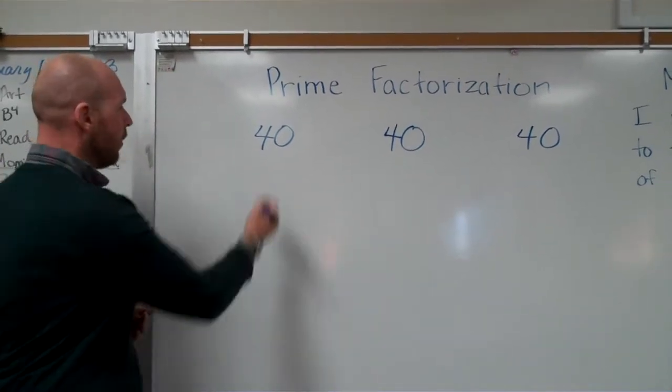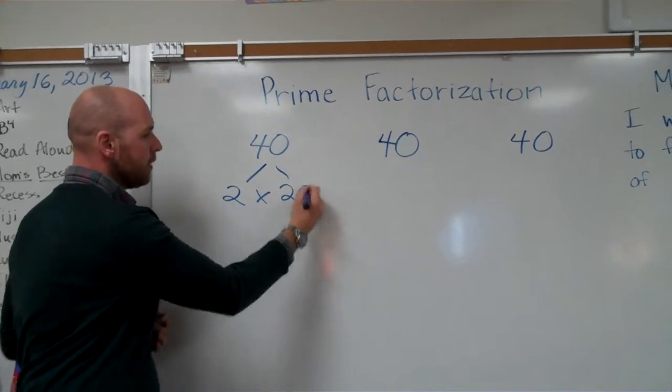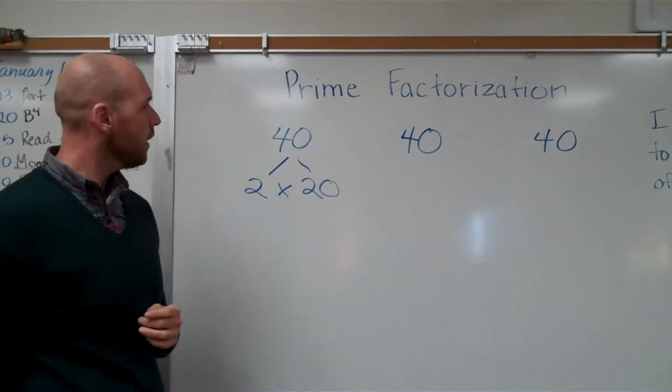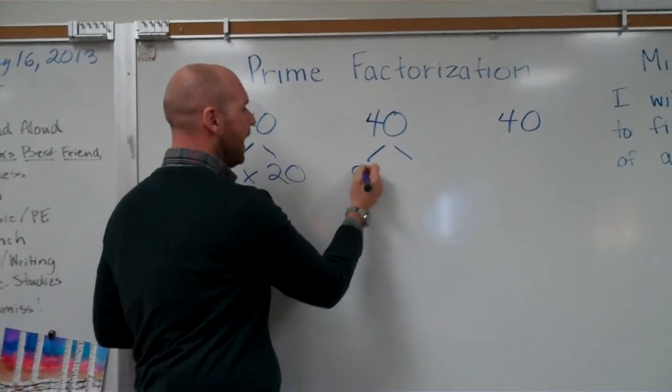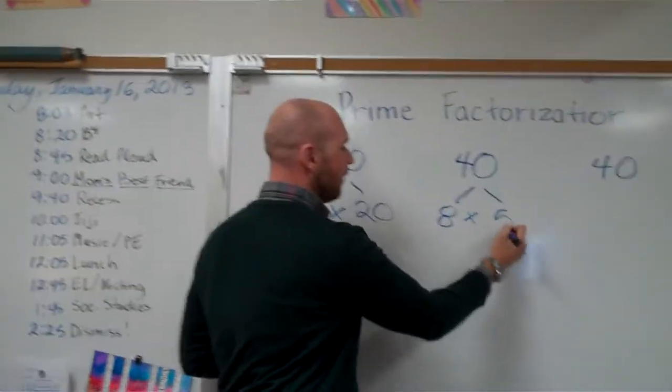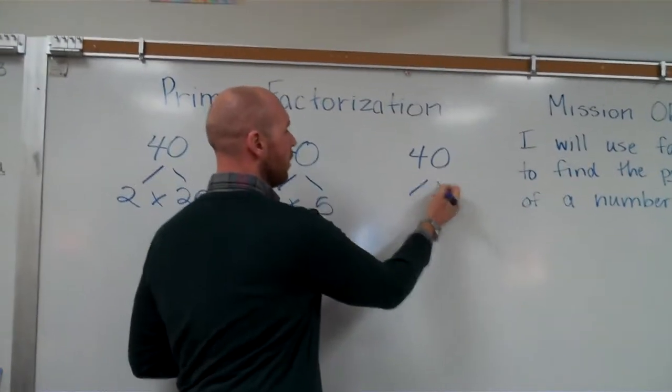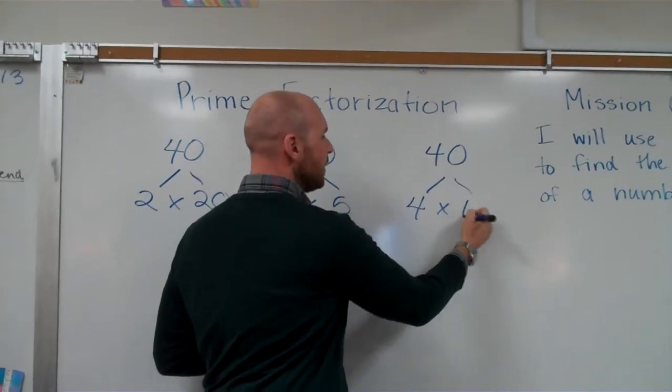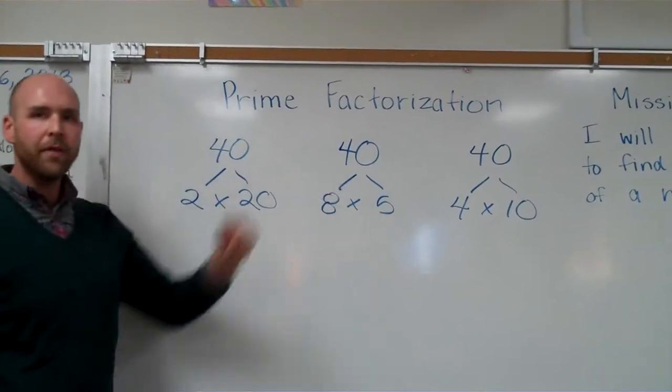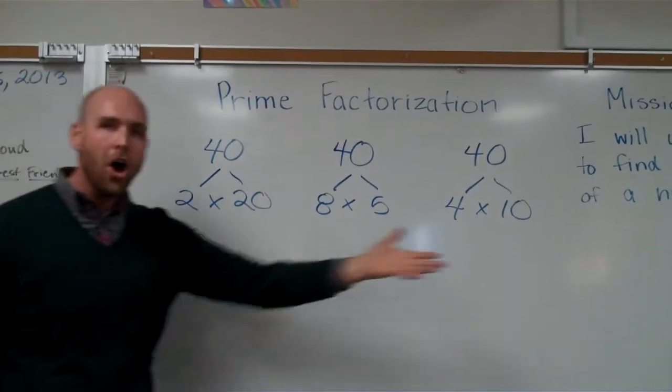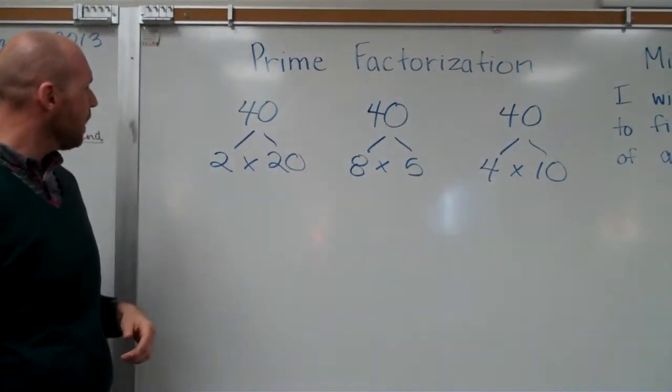So I'm going to show you 3 different ways to get the prime factorization of 40 and that all of them are right. First way to get 40, alright, simple, 2 times 20, there's a start. Another way to get 40, 8 times 5. And another way to get 40, 4 times 10. Three different ways to get to prime factors. And I'm going to show you that they're all correct because we're all going to get the prime factorization.